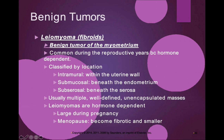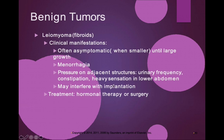Leiomyomas are hormone dependent — they are large during pregnancy and during menopause they can become fibrotic and shrink significantly. When small, they are often asymptomatic. As they grow larger, symptoms include menorrhagia, pressure on adjacent structures, urinary frequency, constipation, a feeling of fullness in the lower abdomen, and they can interfere with implantation. Treatment is typically hormonal therapy or surgery.